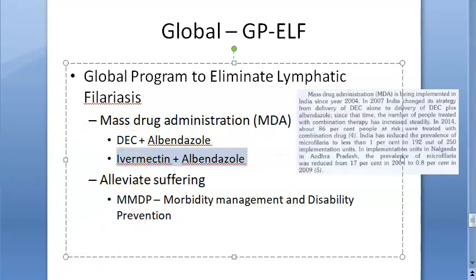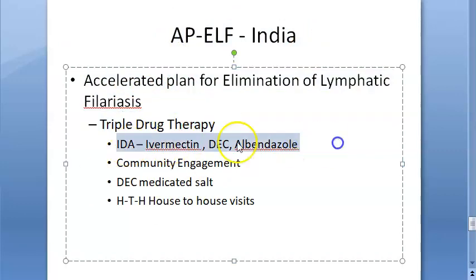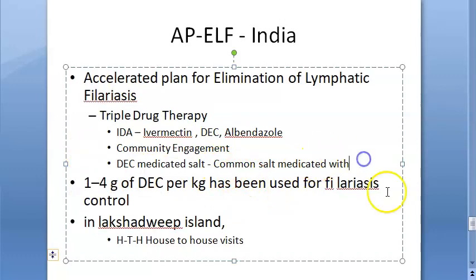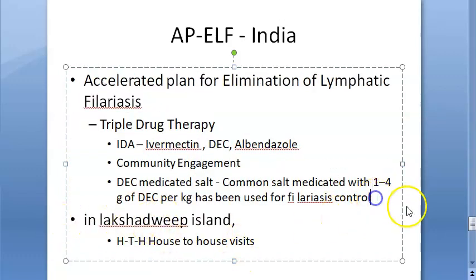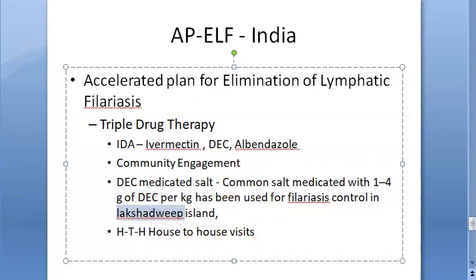In India, there is an accelerated plan for elimination of lymphatic filariasis, which uses triple drug therapy: DEC, ivermectin, and albendazole. Additionally, DEC-medicated salt — common salt medicated with 1 to 4 grams of DEC per kg — has been used for filariasis control in Lakshadweep Island, likely because it is a coastal area. This is implemented after an initial reduction in prevalence has been achieved by mass or selective treatment.